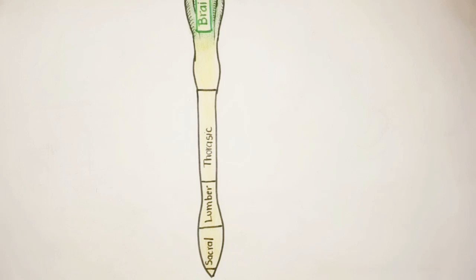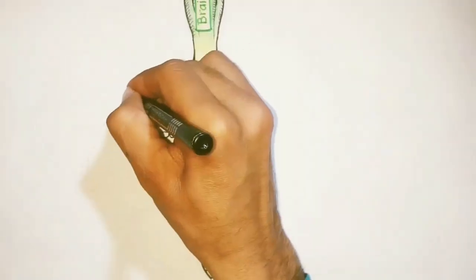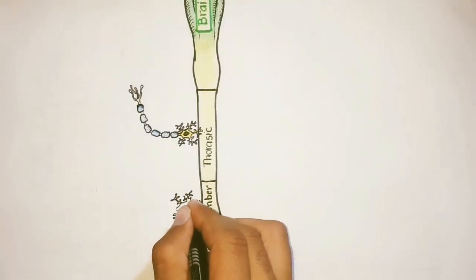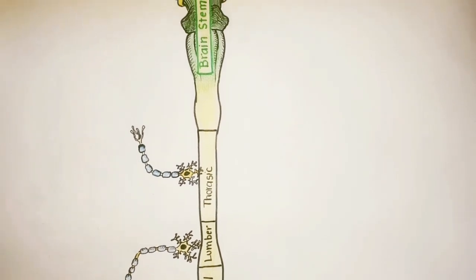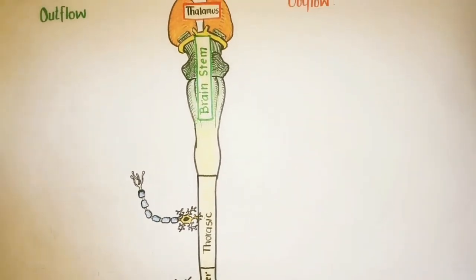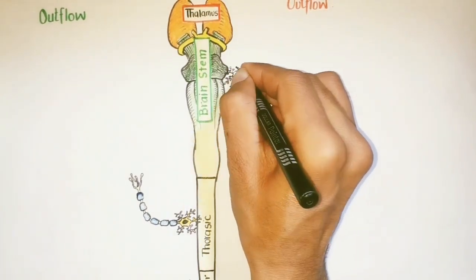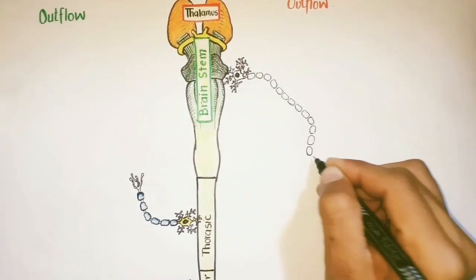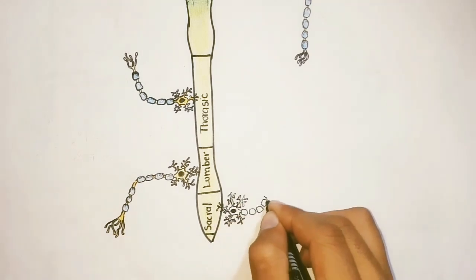The sympathetic division is called thoracolumbar outflow because the preganglionic fibers of this system arise from the thoracic and lumbar regions of the spinal cord. While the parasympathetic nervous system is known as the craniosacral outflow, because the preganglionic fibers of this system arise from this region of the brain, which is the brainstem, and other fibers of this division arise from the sacral region of the spinal cord.